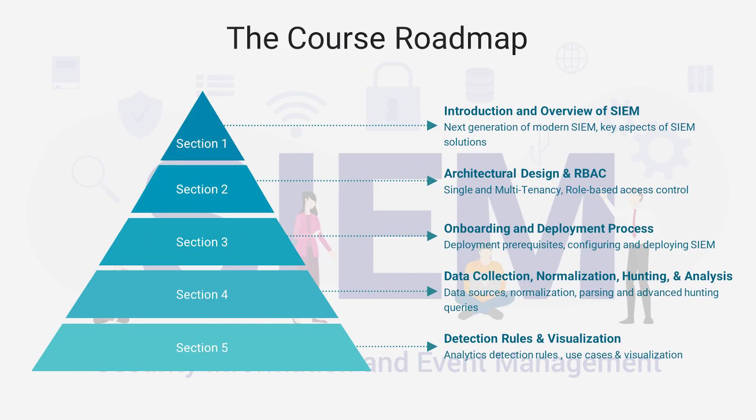To get more details on the course roadmap, this course has been divided into 10 sections. The first section provides a quick introduction and overview of security information and event management SIEM solutions — what we mean by next-generation modern SIEM compared to the legacy traditional one, and the main key aspects of SIEM solutions. Then we jump into architectural design and role-based access control, based on roles, permissions, or even attribute or resource levels.